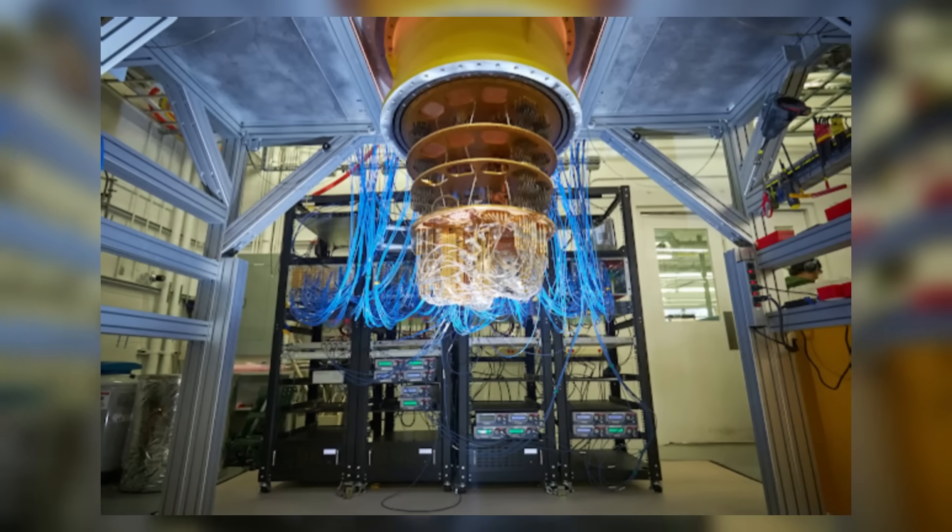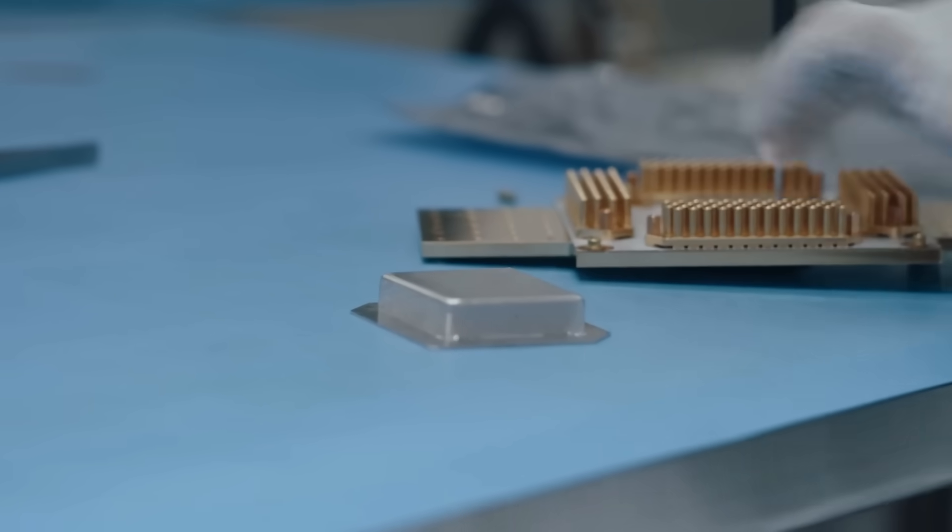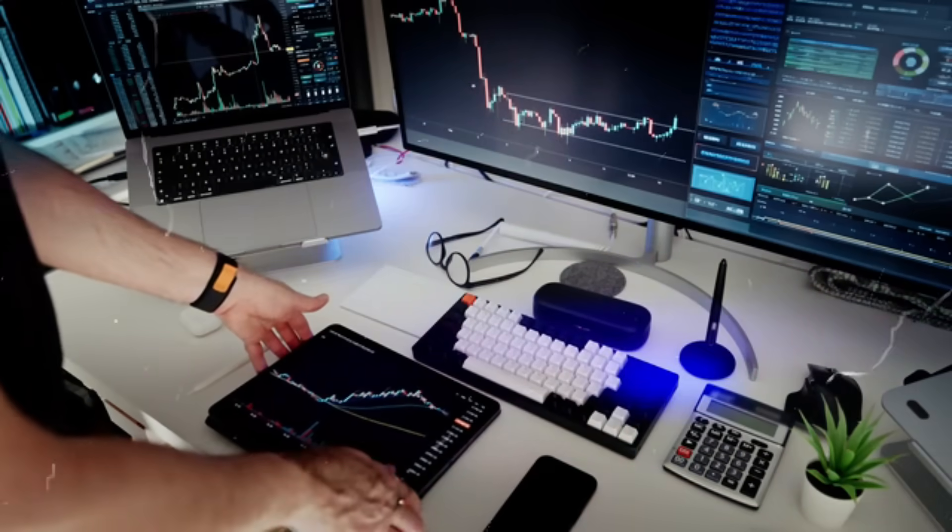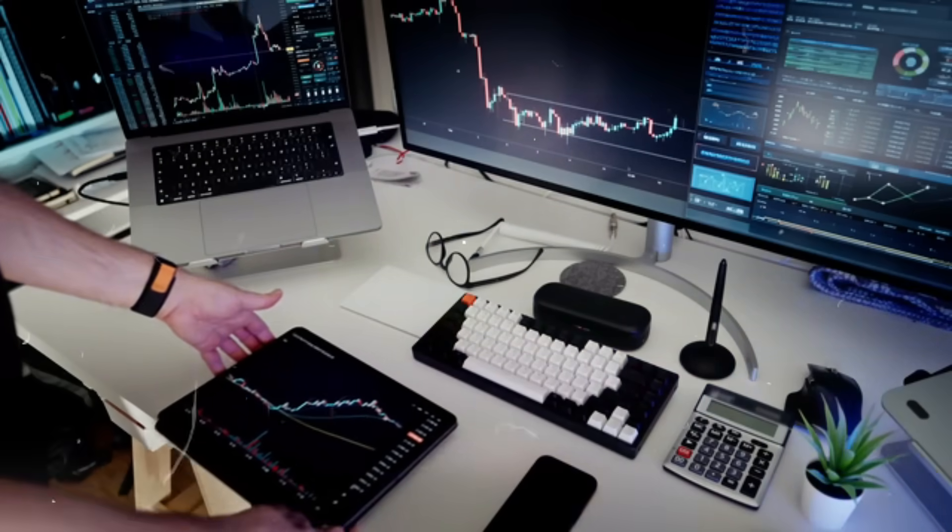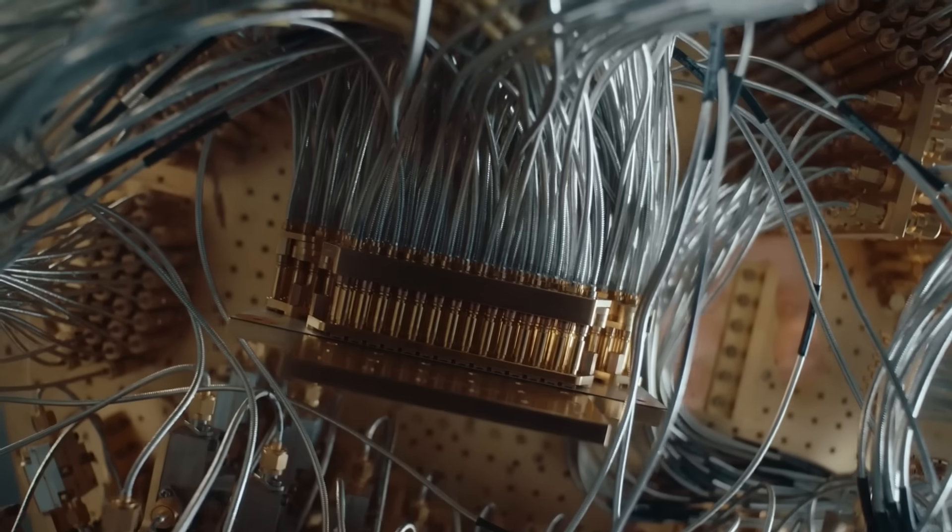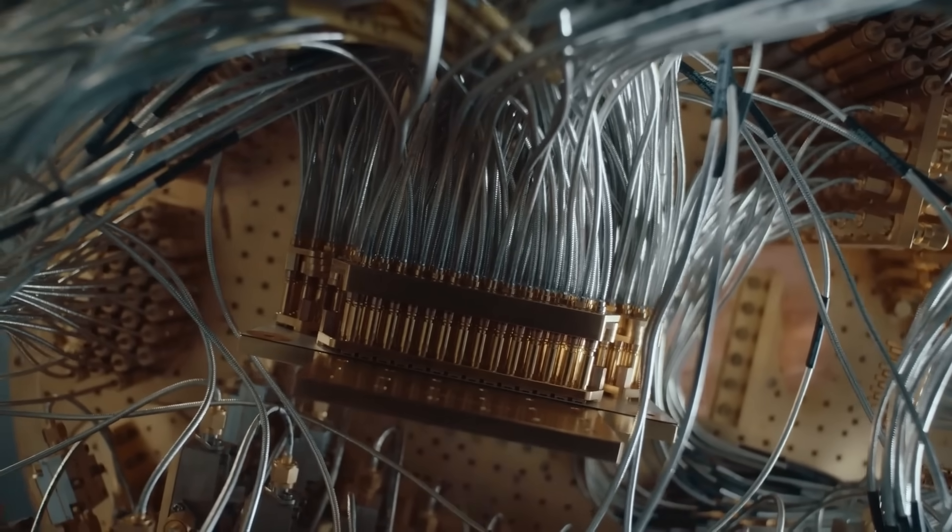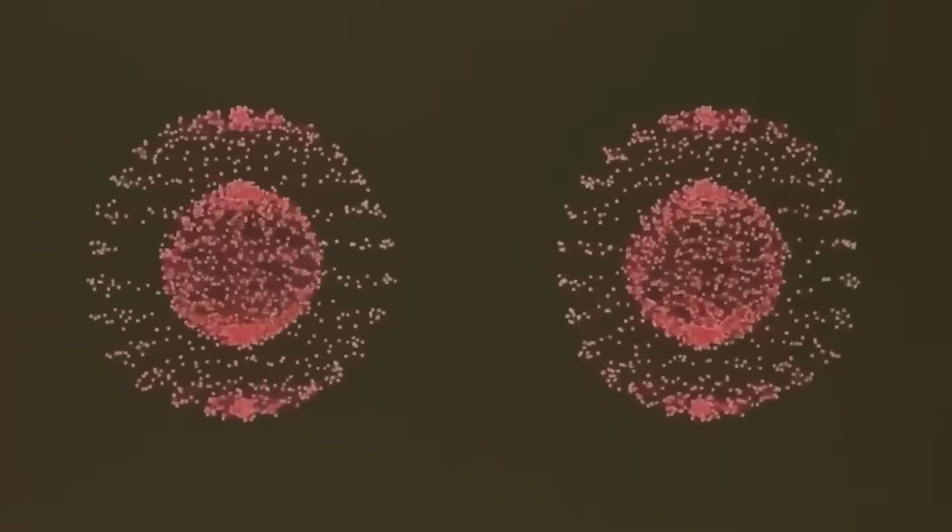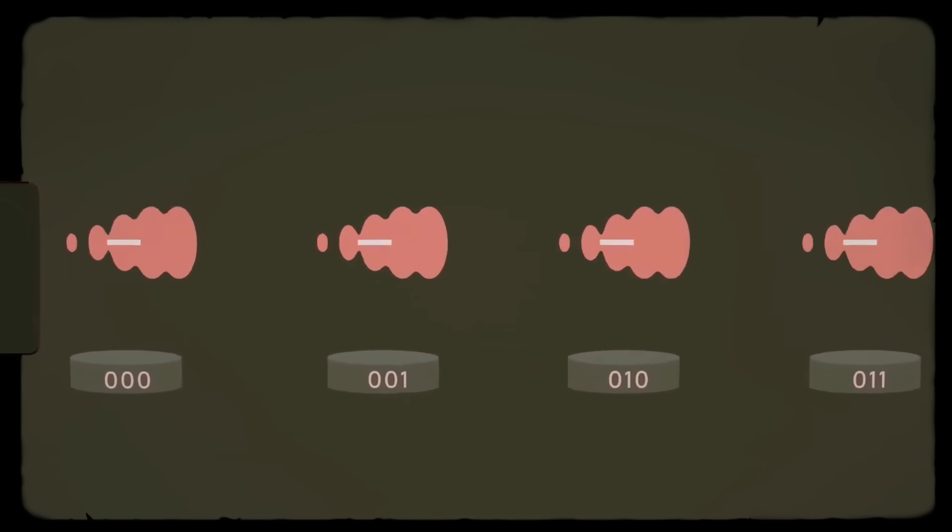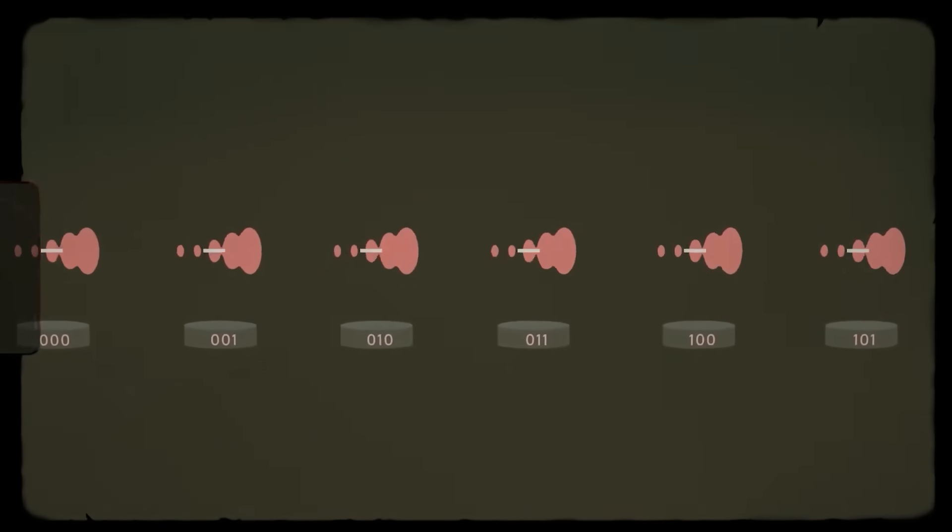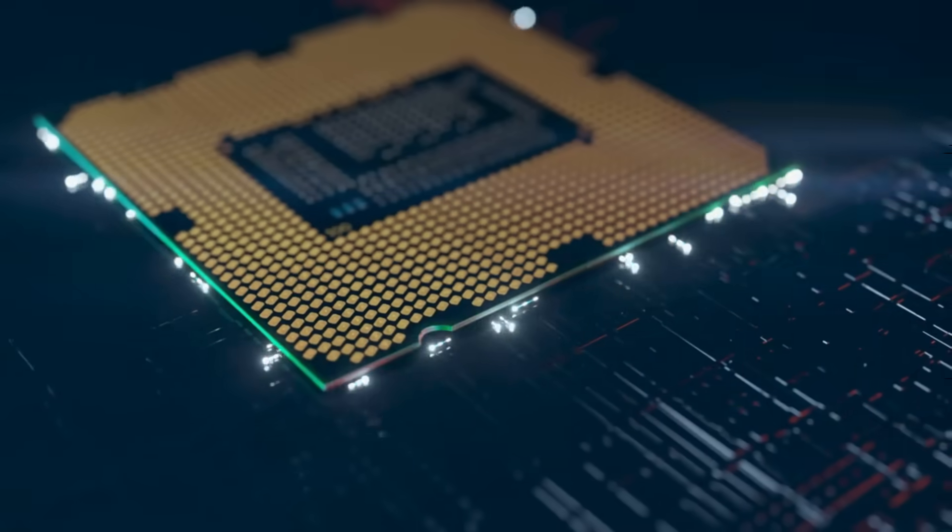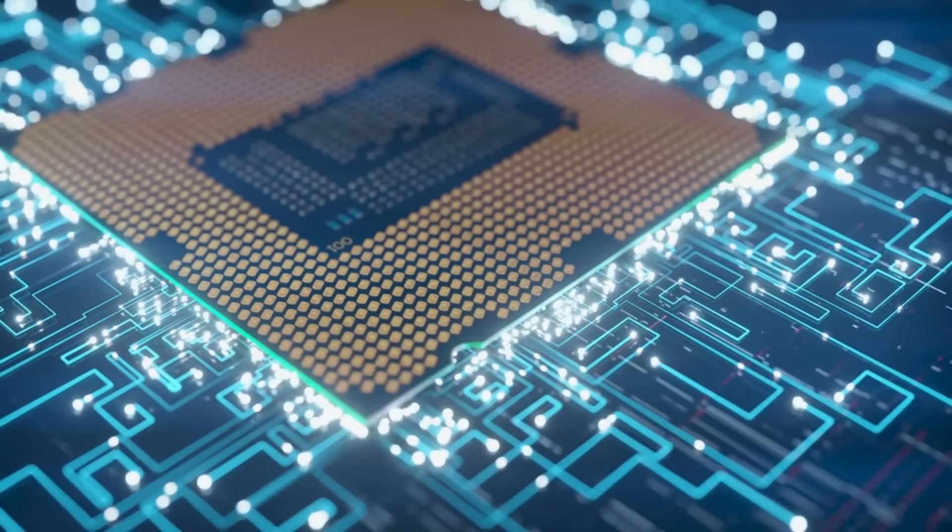Google's Sycamore processor is one of the most advanced quantum computers in existence. Unlike traditional computers, which process information sequentially using binary code, strictly zeros and ones, quantum computers take a completely different approach. Thanks to a phenomenon known as superposition, Google's quantum computer can hold both zero and one at the same time, exponentially increasing its processing power and, in theory, allowing it to compute across multiple possibilities simultaneously.